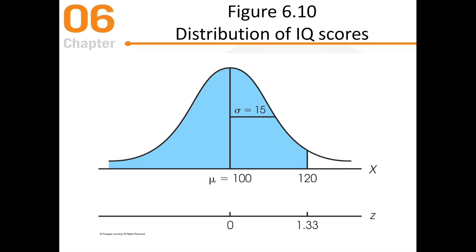For a distribution of IQ scores — average IQ of 100 with a standard deviation of 15 — if I have an IQ of 120, my z-score is 1.33. Using the table, the probability that somebody will have an IQ score greater than 120 corresponds to z=1.33: it's 0.0918, about a 9% chance. Looking at the body: there's a 90.82% chance of randomly pulling someone with an IQ score less than 120.